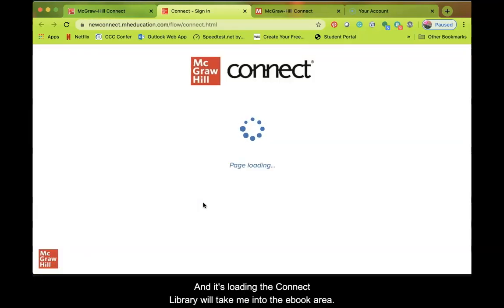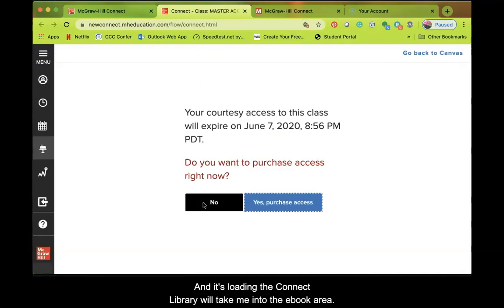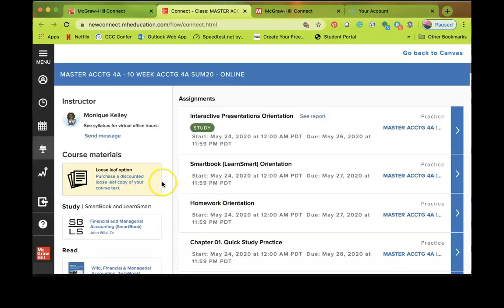And it's loading. The Connect Library will take me into the eBook area. Now again, most of you probably on courtesy, so my courtesy code is going to expire June 7th. Make sure you get your textbook before that expiration. I'm not going to purchase, so I'm going to say no.